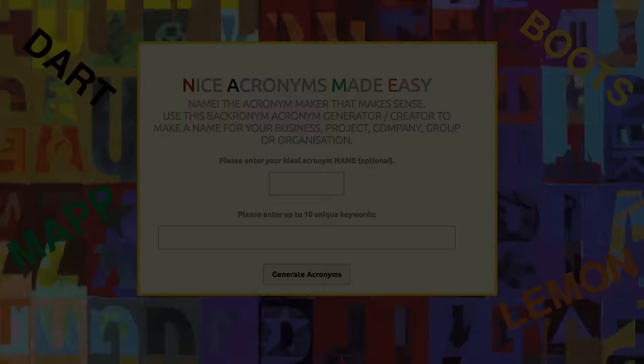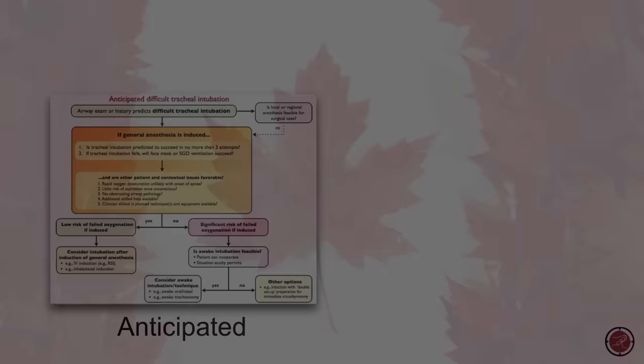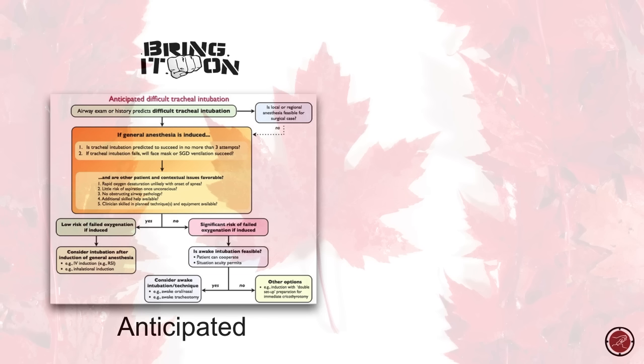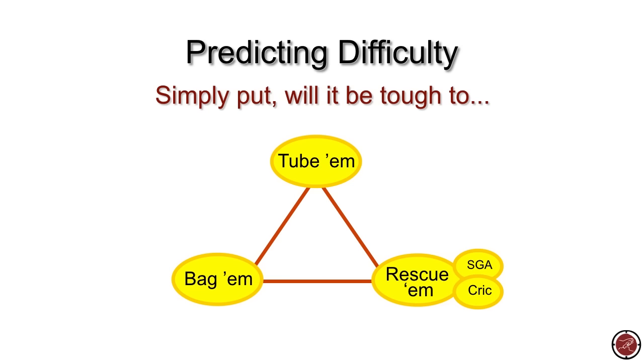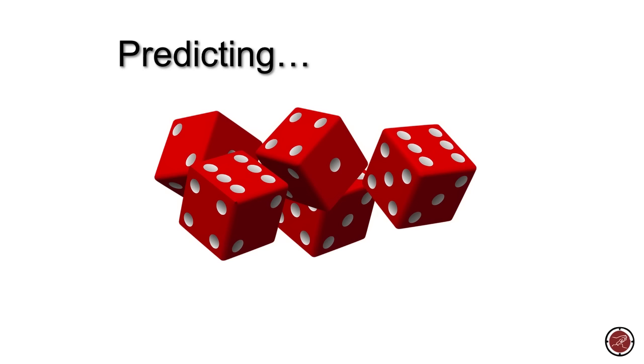The Canadian Airway Focus Group — which I had the privilege of being part of, mostly made up of anesthetists — published the approach for both the anticipated and unanticipated difficult airway. What we're trying to predict is difficulty: simply, is the patient going to be tough to tube, bag, or ultimately rescue via a supraglottic airway or surgical approach? The problem with prediction is that we're not very good at it, and upwards of 90% of difficult airways are unanticipated.